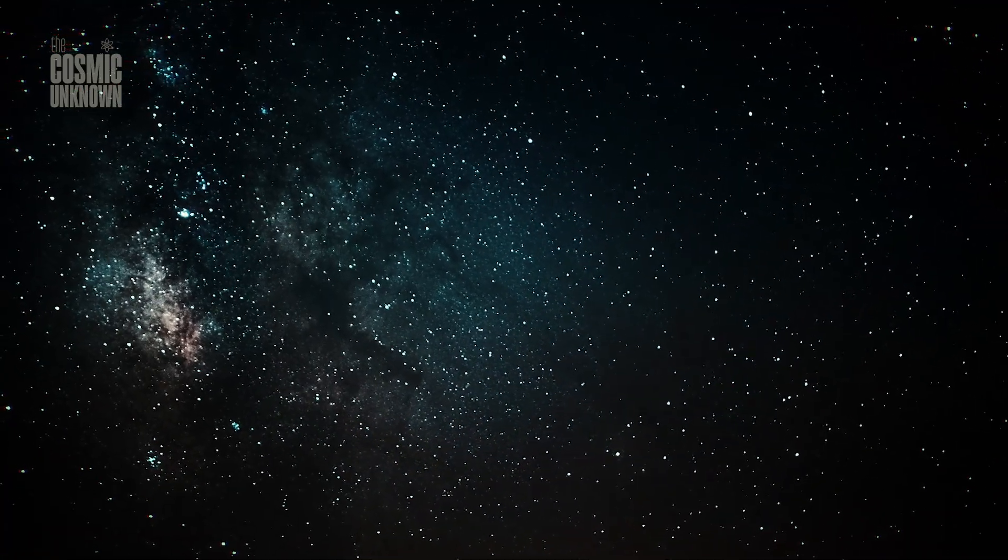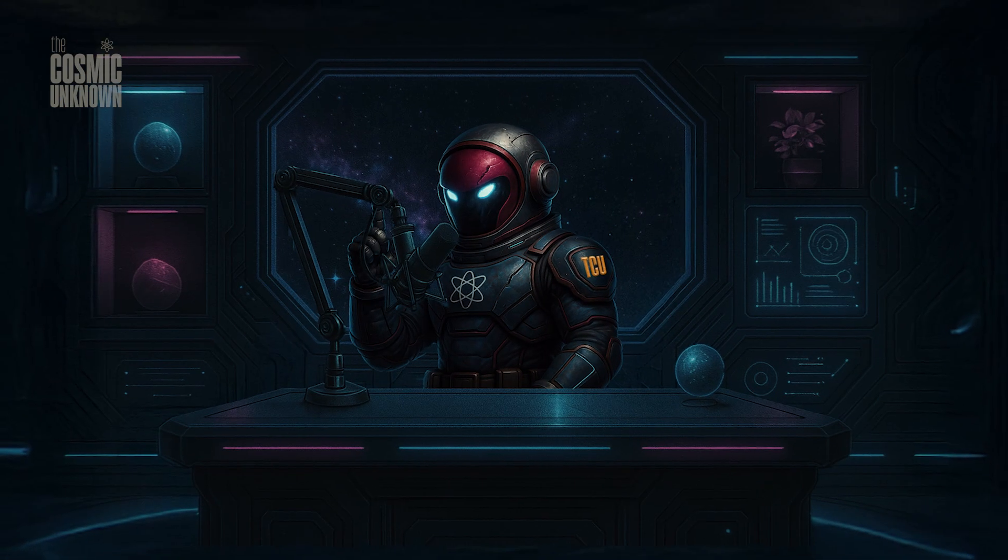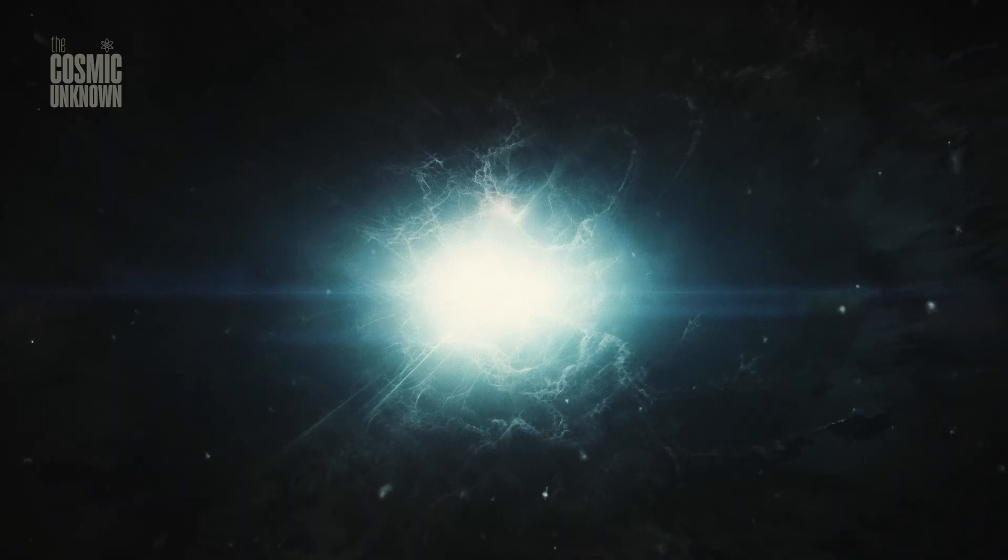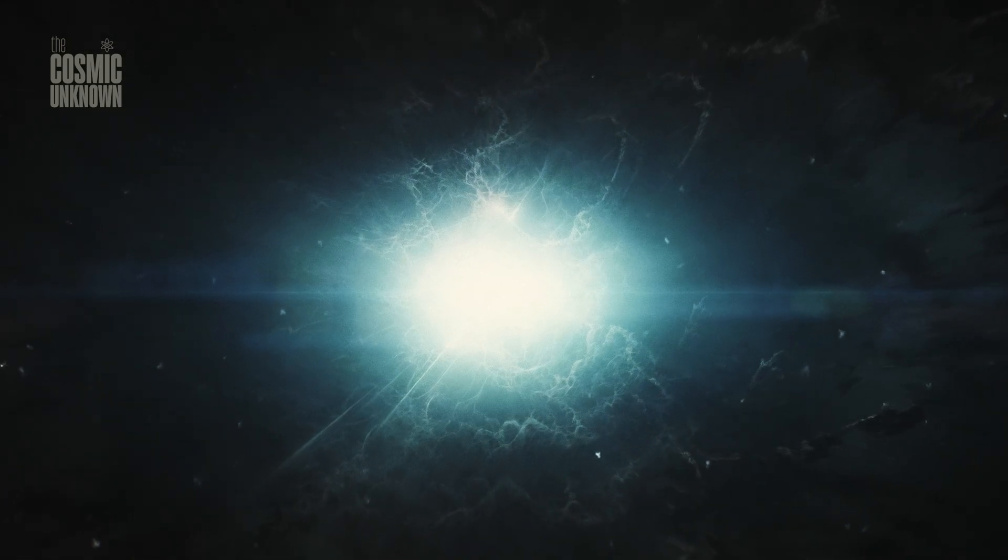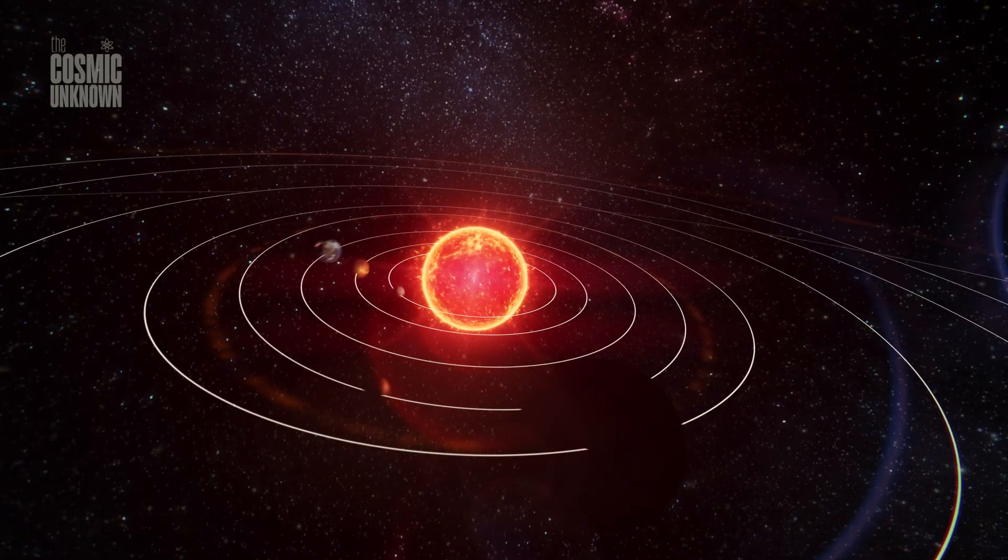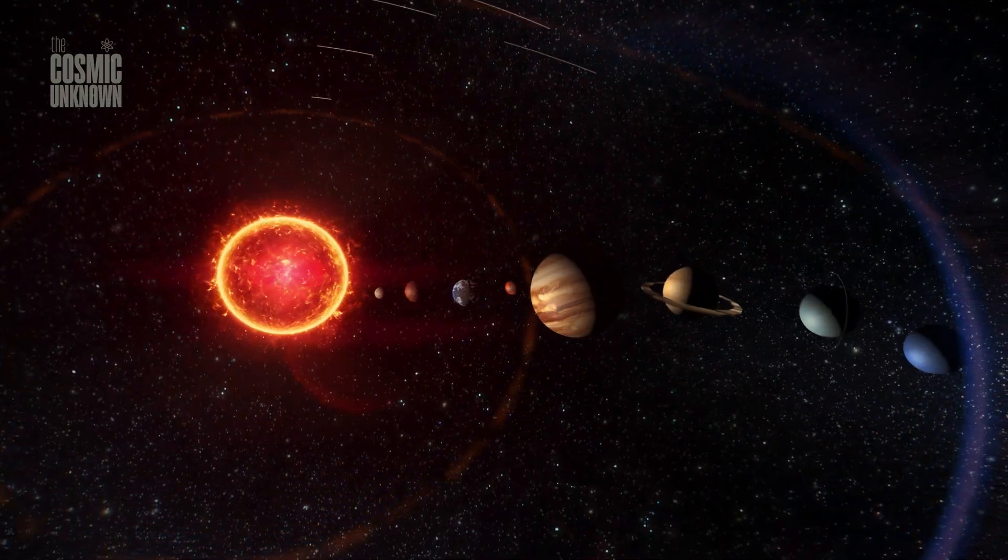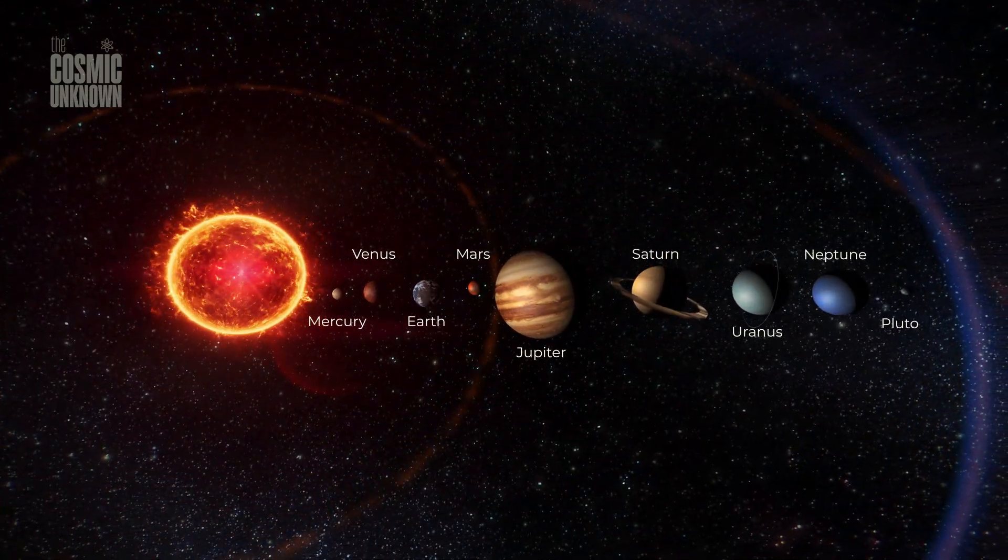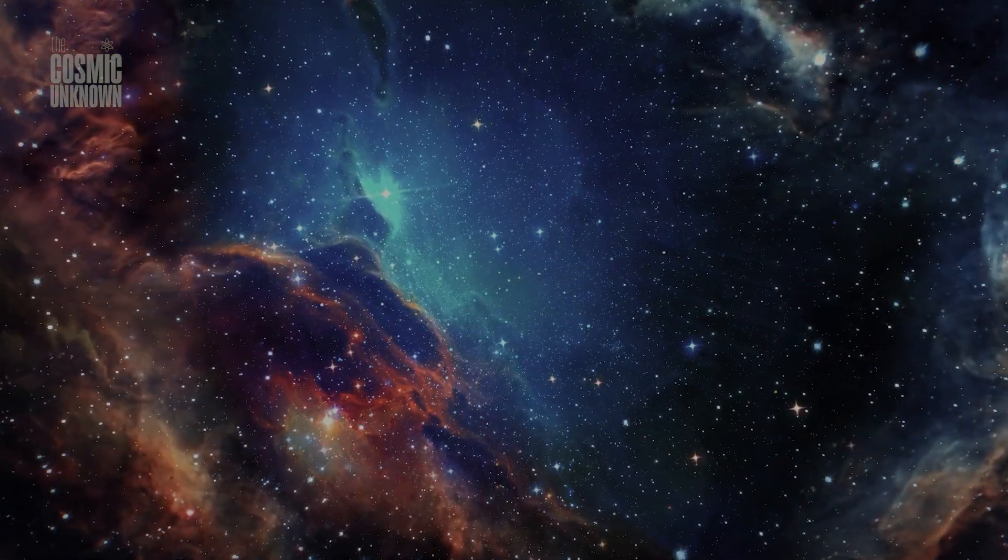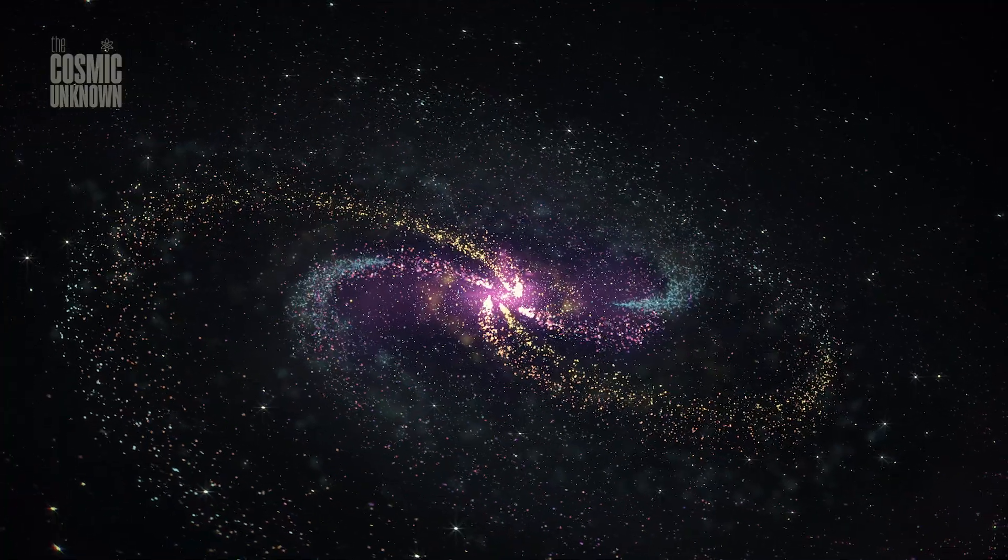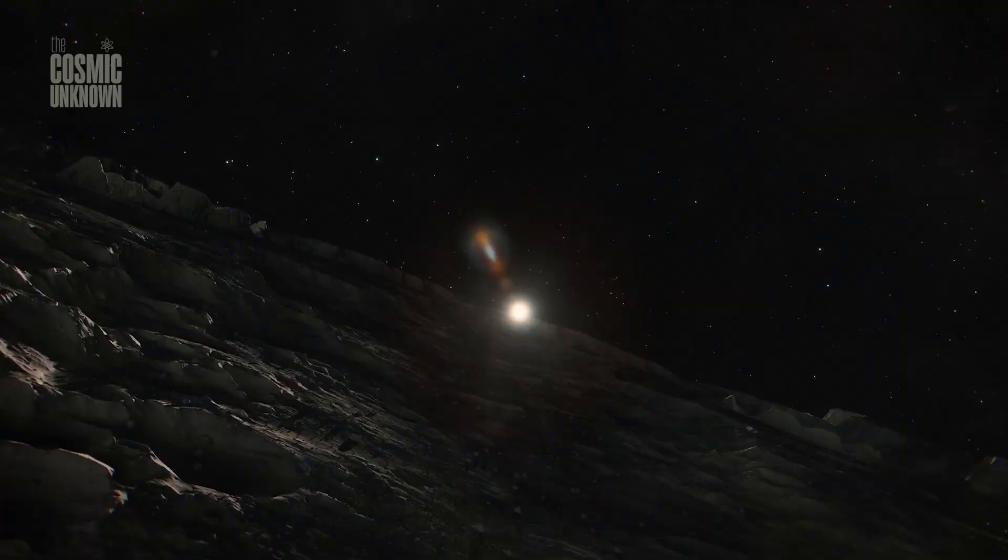This was a profound correction. Humanity had already endured the shock of discovering that the Earth wasn't the center of the solar system. Now, it had to accept something just as humbling. Our sun, too, was displaced. Not by accident, but by cosmic design. We were not central. We were peripheral. The galaxy didn't revolve around us. We were simply riding along one of its spiral arms, tucked into a quieter corner of a much larger system.